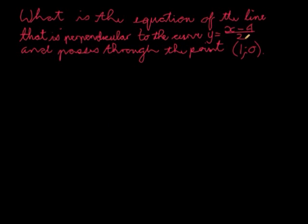In this question, what is the equation of the line that is perpendicular to the curve y = (x - 4)/2, and passes through the point (1, 0)?